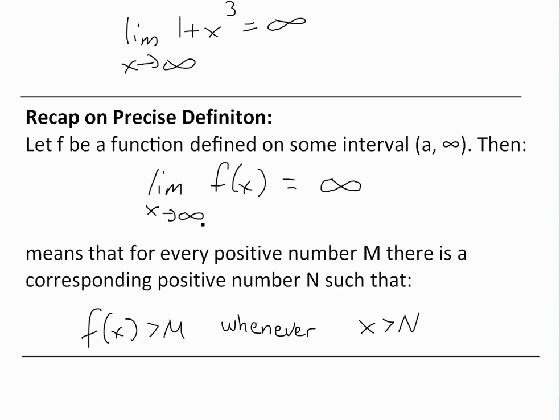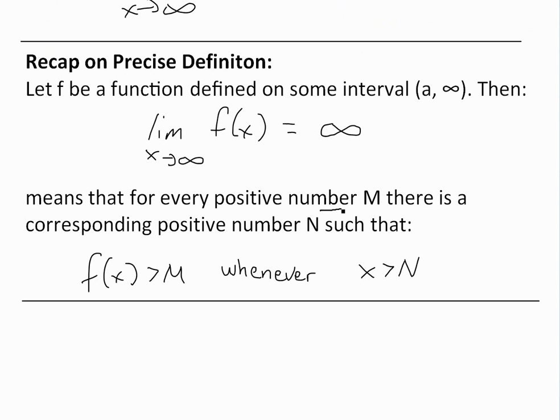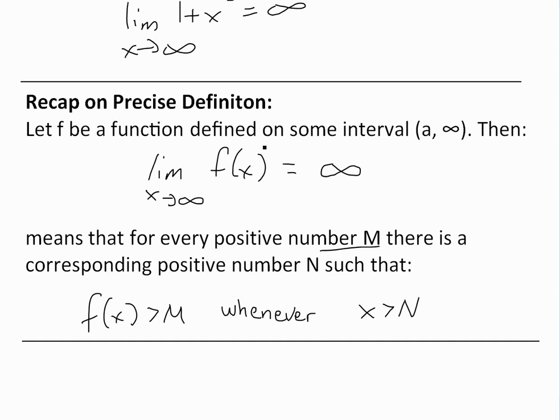Then limit as x approaches infinity of f(x) equals infinity means that for every positive number M greater than zero, there's a corresponding positive number N such that f(x) is greater than M whenever x is greater than N. So make sure you watch the video on this in more detail.